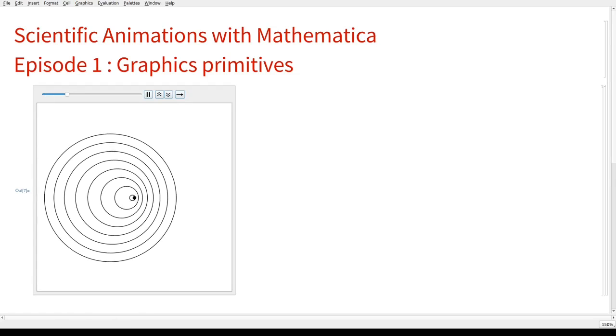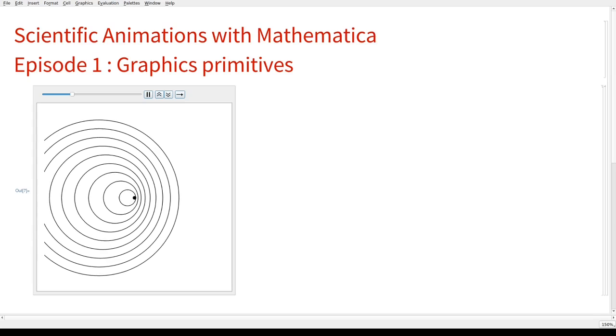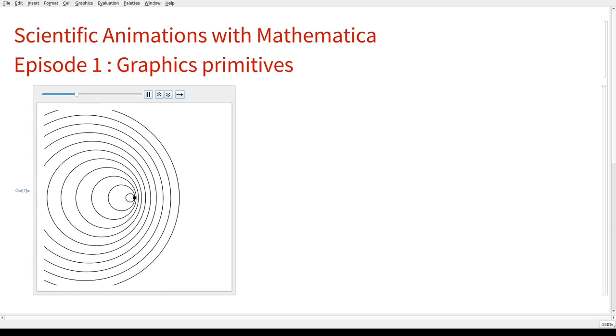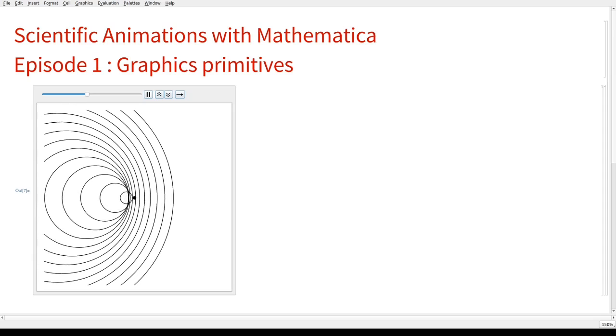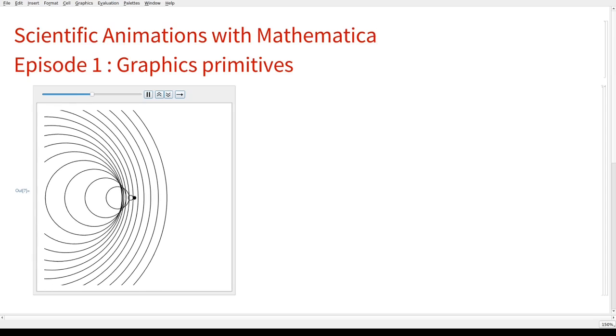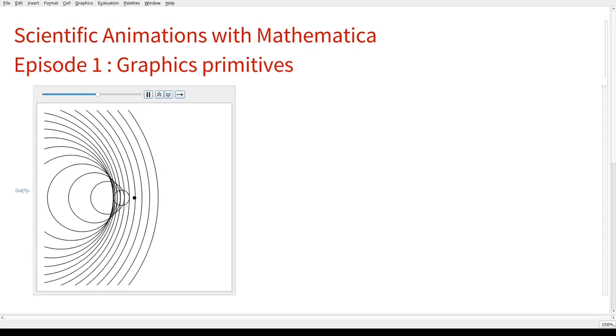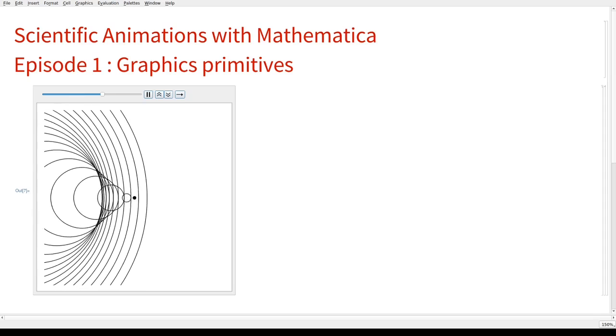Today, we are going to look at manipulating graphic primitives, and our goal will be to produce a simple animation showing how a sonic boom looks like, like the one that is now running on the screen.